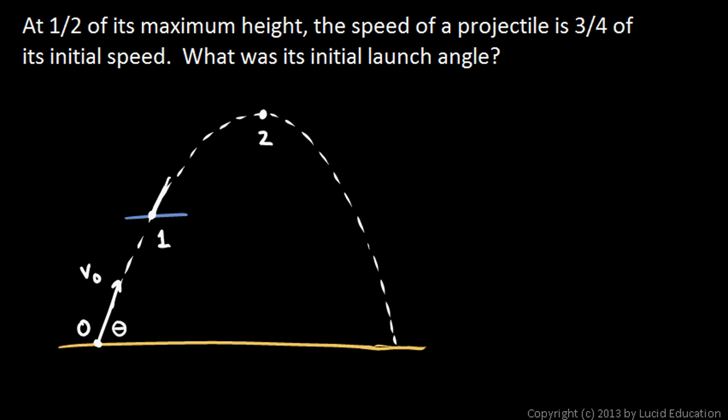The speed at point one we'll call v1, and the speed at point two — where the projectile is moving directly to the right — we'll call v2. I originally tried to solve this with the equations of constant acceleration, and it's not easy that way. So I ended up using energy equations, which turned out to be fairly easy. Energy equations typically provide an alternate method, and in many cases the solution is substantially easier.